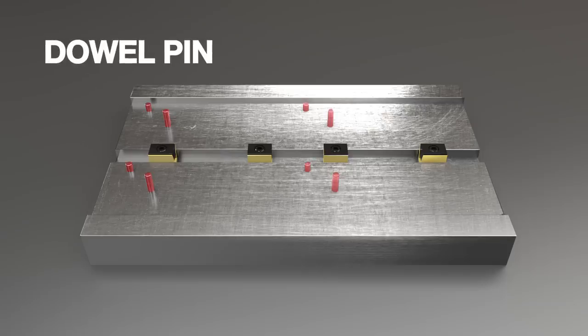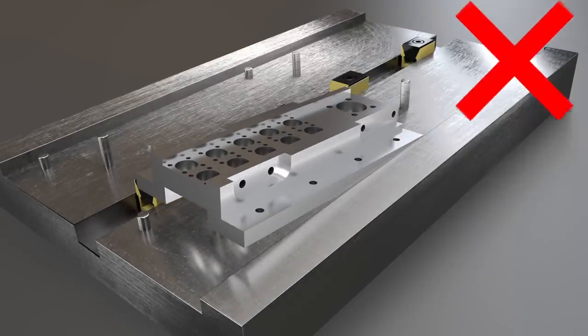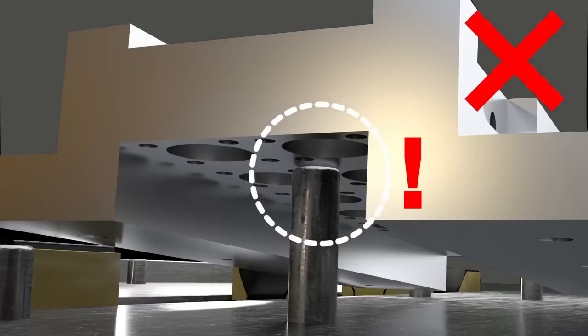Now typically we'll mistake proof a fixture by adding a dowel pin in such a way that the part is blocked from being loaded incorrectly. But in a lot of cases using a probe to check our part orientation will make more sense.